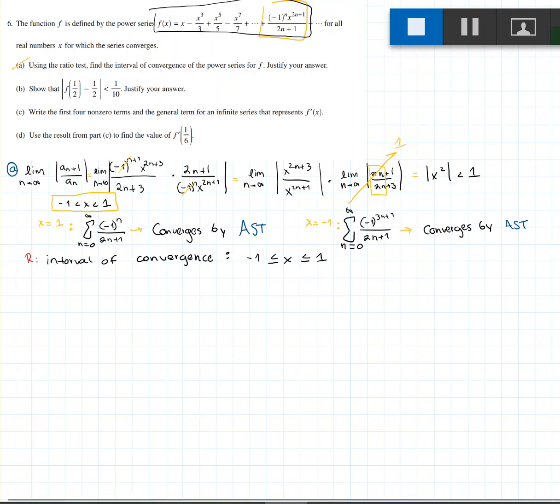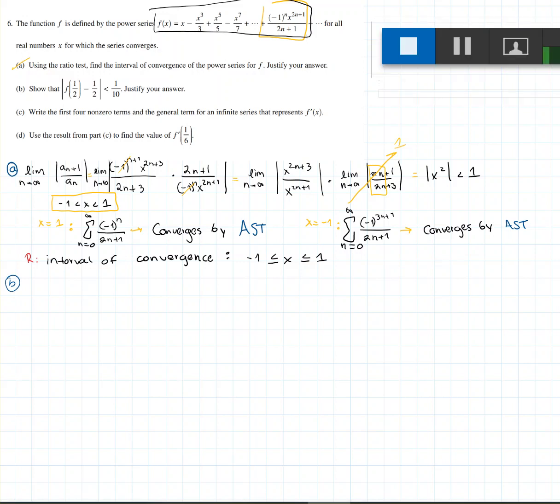Now for part b, we're asked to show that the absolute value of f(1/2) minus 1/2 will be smaller than 1/10. We can show this real easy, because we know that for x equals 1/2, the series for f(x) is going to be an alternating series, which has the terms that is decreasing each time. We know that each time this is minus plus, but at the end of the day, since it's alternating, it will approach 0, because we proved that by the alternating series test before.